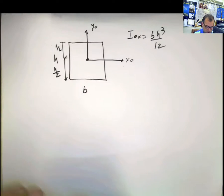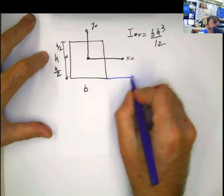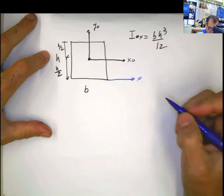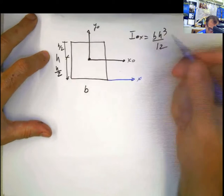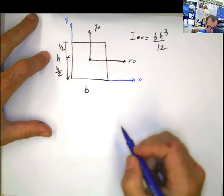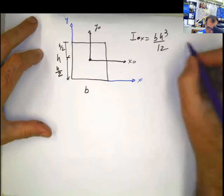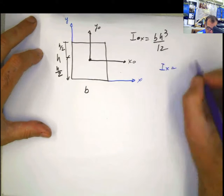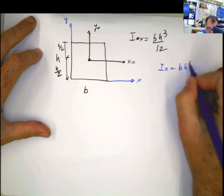However, if we calculate it with respect to an axis that passes through here, let's say x and y, I'm not going to even consider the y, but if you want to consider y here you can. Then the moment of inertia with respect to the x-axis that we calculated was bh cubed divided by 3.